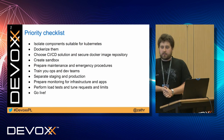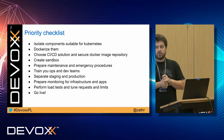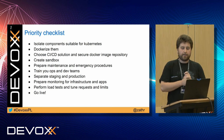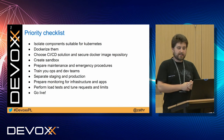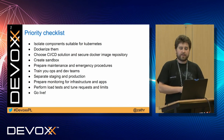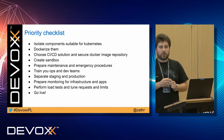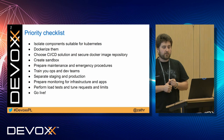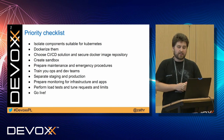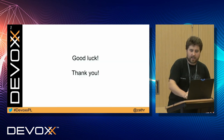Now, a quick priority checklist. Isolate your components for Kubernetes and Dockerize them. Choose your CI/CD solution and secure your Docker image repository — if you are running GitLab, they provide one for free. Create a sandbox and prepare maintenance procedures for maintenance and emergency. Train your teams to follow them. Consider separating staging from production. Prepare monitoring for infrastructure and apps. Perform load tests and tune your requests and limits accordingly. Then you can go live. Good luck, and thank you.